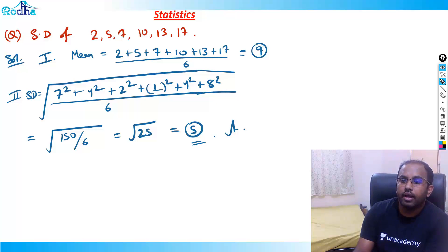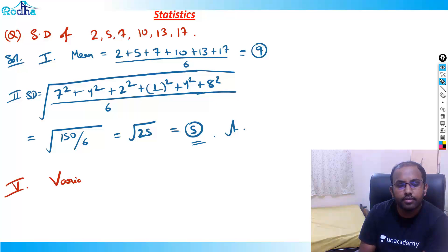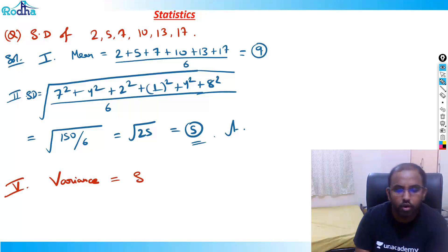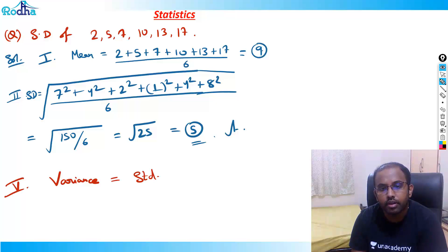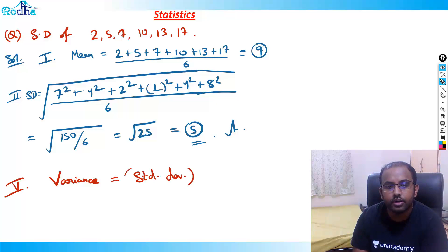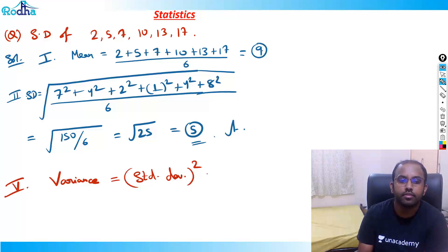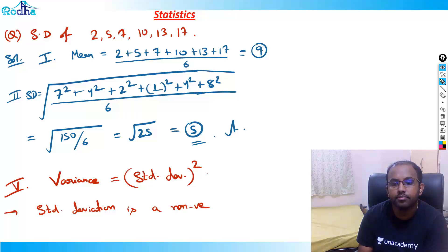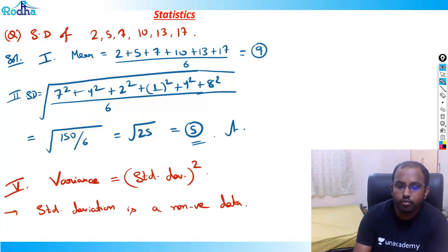The fifth measure is variance, which is simply the square of the standard deviation. Variance = (standard deviation)². Also note that standard deviation is always non-negative data.